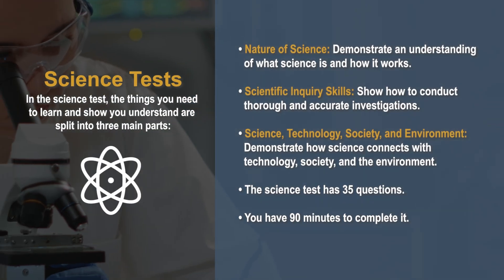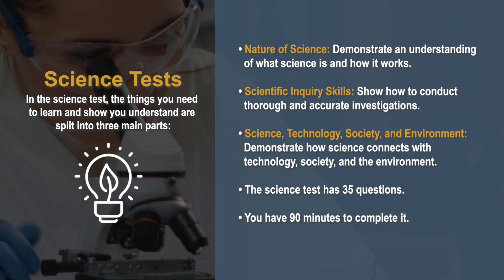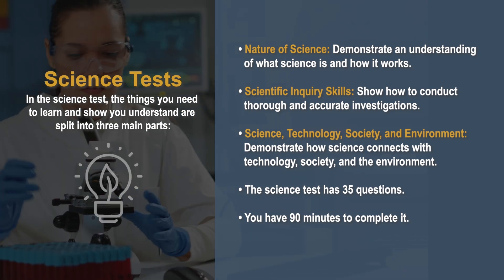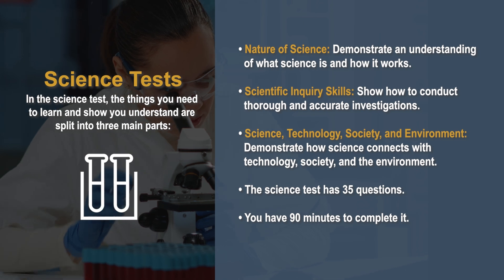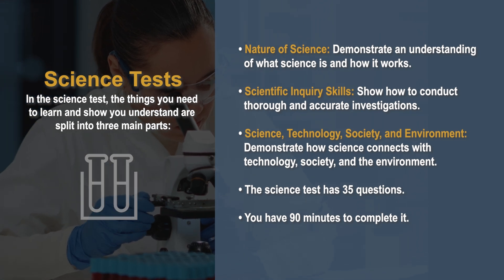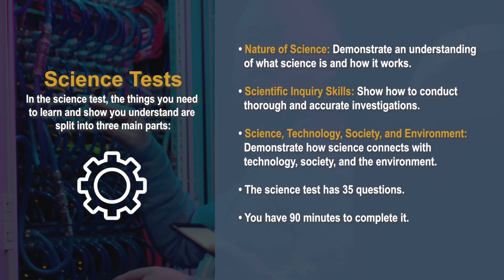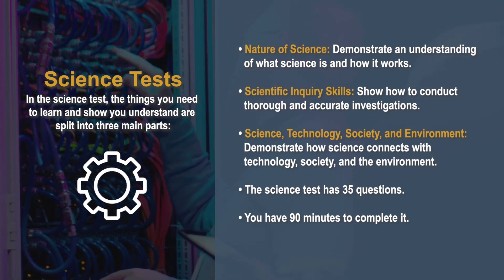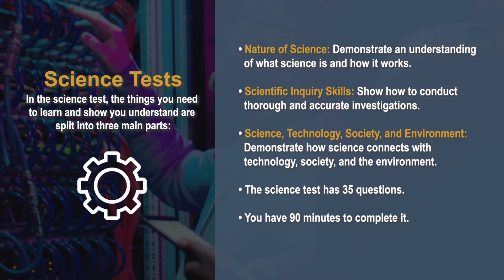In the science test, the things you need to learn and show you understand are split into three main parts: nature of science — demonstrate an understanding of what science is and how it works; scientific inquiry skills — show how to conduct thorough and accurate investigations; and science, technology, society and environment — demonstrate how science connects with technology, society, and the environment. The science test has 35 questions and you have 90 minutes to complete it.